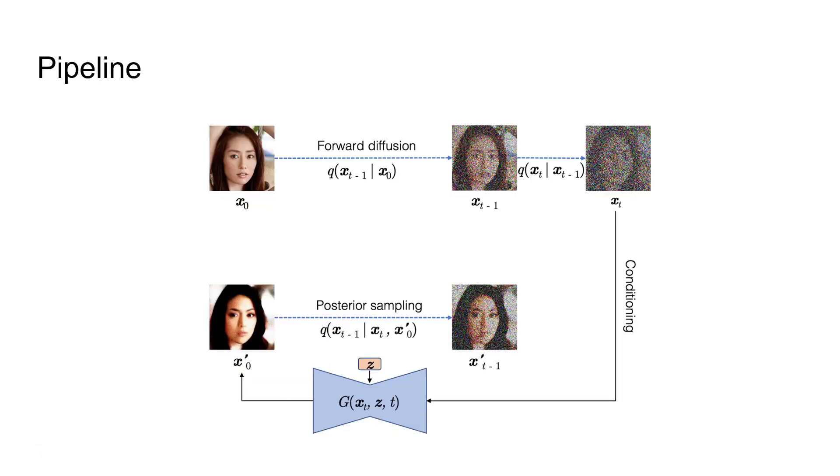So going back to the pipeline, this formulation is actually the same as the formulation in the original DDPM paper. The main difference is that in DDPM, x_0, or rather the noise that perturbs x_0 to x_t, is predicted as a deterministic mapping of x_t, whereas in this case x_0 is produced by the generator with random latent variable z.